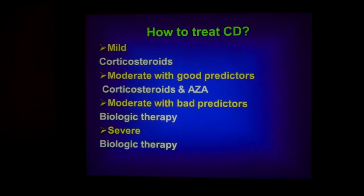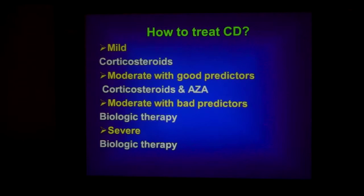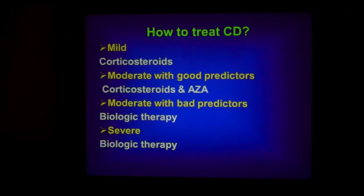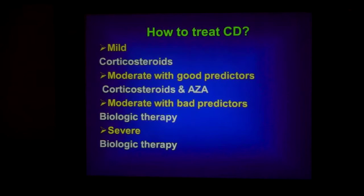How to treat Crohn's: for mild disease, start with steroids for induction of remission. For moderate Crohn's with good predictors — not young, no extensive lesions, no oral lesions, no deep ulceration — start with steroids and azathioprine. For moderate Crohn's with bad predictors — young age, extensive lesions, deep ulcerations, or oral involvement — start directly with biologic therapy rather than step-up therapy. For severe or fistulizing Crohn's, start directly with biologic therapy.